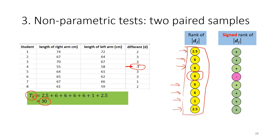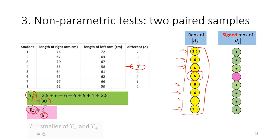Then we sum the negative ranks. In this case there is only one rank with a negative sign, which is rank 6. So the total of the negative ranks is 6. The test score T is the smaller of the two totals, which is 6.